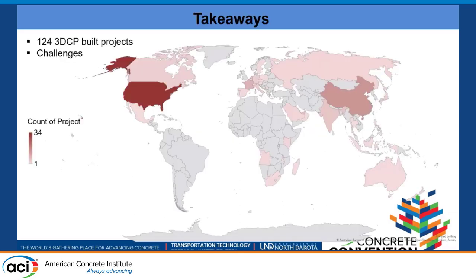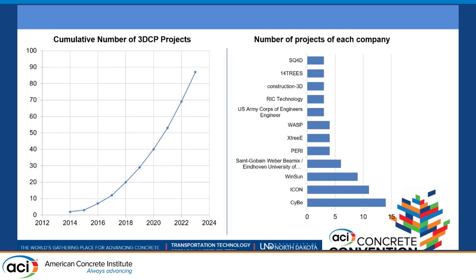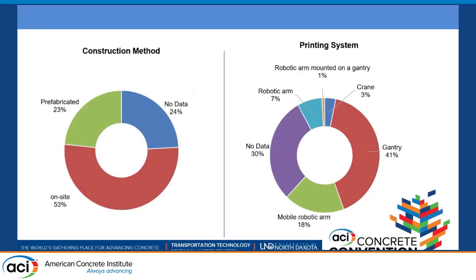I found 124 projects around the world. Looking at the world map, we can see the U.S. built the most number of projects, followed by China. Not all information about the projects was publicly available, which made the review more challenging. The cumulative number of 3D CP projects has increased exponentially in recent years, with Icon being the most active company in the U.S. For construction method, on-site was preferred over prefabrication, and the Gantry system was used the most, followed by mobile robotic arm and robotic arm.